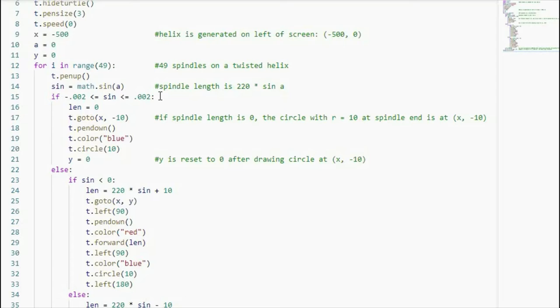If the sine is less than zero here or equal to zero here, that means the spindle length should be zero. So if the sine is in that interval, the spindle length is zero and then there is no spindle for the circle corresponding to this angle here.